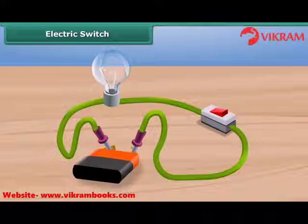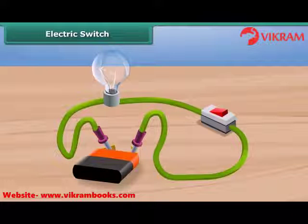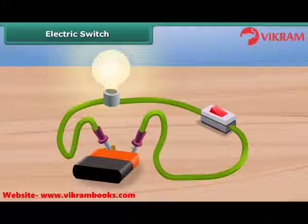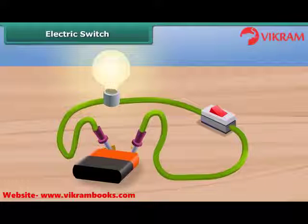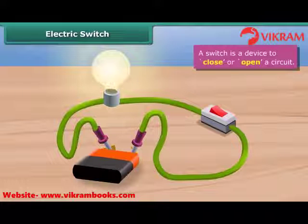The switch is made so that under normal conditions the circuit remains open and current does not flow. When we press the other end of the strip on the switch, it gets connected to close the circuit. The current flows through the circuit and the bulb starts glowing. A switch is a device to close or open a circuit.